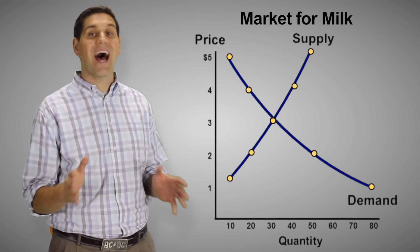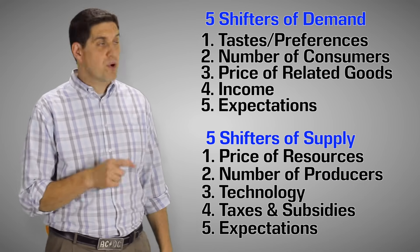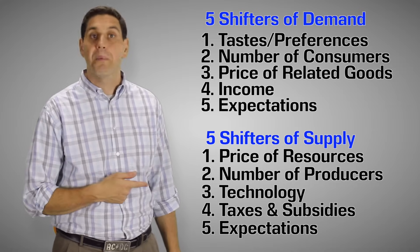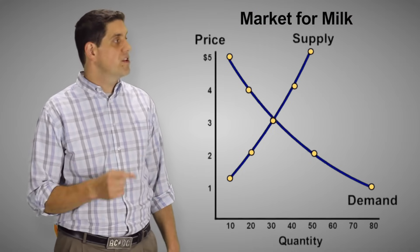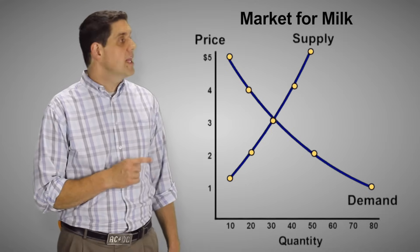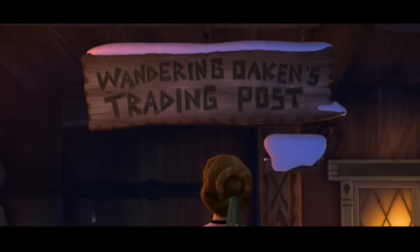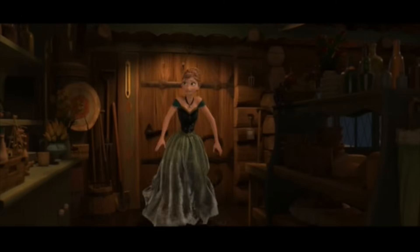But what if there's a shift in the entire curve? Remember we learned the shifters in previous videos. There's five shifters of demand and there's five shifters of supply. To understand what happens when there's a shift in demand or a shift in supply, let's take a look at a scene from the movie Frozen. In this scene, Princess Anna walks into wandering Oaken's trading post and we find out what happens when there's a change in a market.